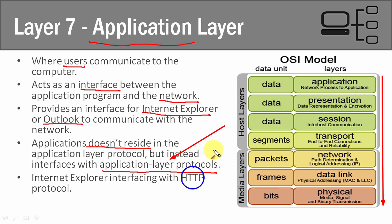So that's what layer 7 is — the very top layer of the OSI model, where applications interact with the network. You'll notice it says 'network processes to applications,' meaning network protocols interact with an application, allowing it to communicate with the network. That is the very top layer of the OSI conceptual model. In the next lecture, we're going to talk about layer 6, the presentation layer.